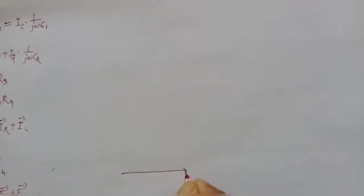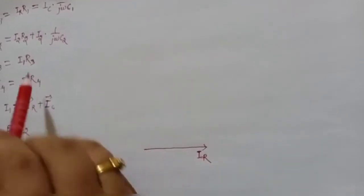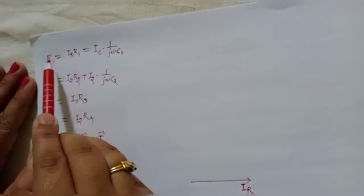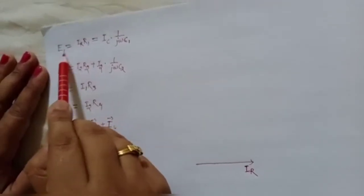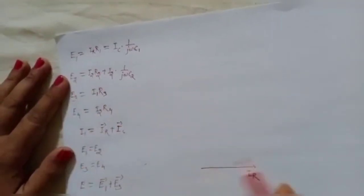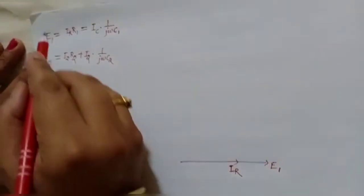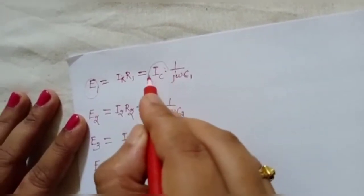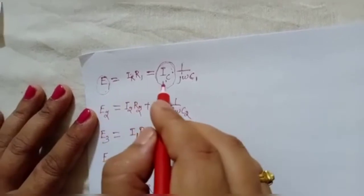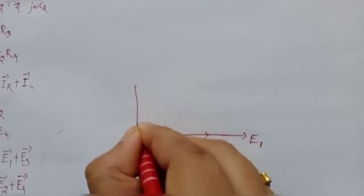Taking IR as the reference phasor: since E1 = IR·R1, which is a resistive branch, E1 must be in phase with IR, so we draw E1 along IR. Since E1 = IC·(1/jωC1), the current IC leads E1 by 90 degrees because it is a capacitive branch, so IC is drawn perpendicular to E1.